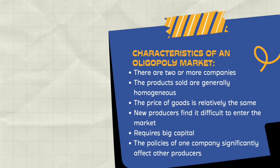The second characteristic of the oligopoly market is that the products sold are homogeneous and can replace each other. One example is cigarettes. Products that are not selling well in the market can be replaced by other cigarettes. For this reason, cigarette products are called products marketed in this type of market.